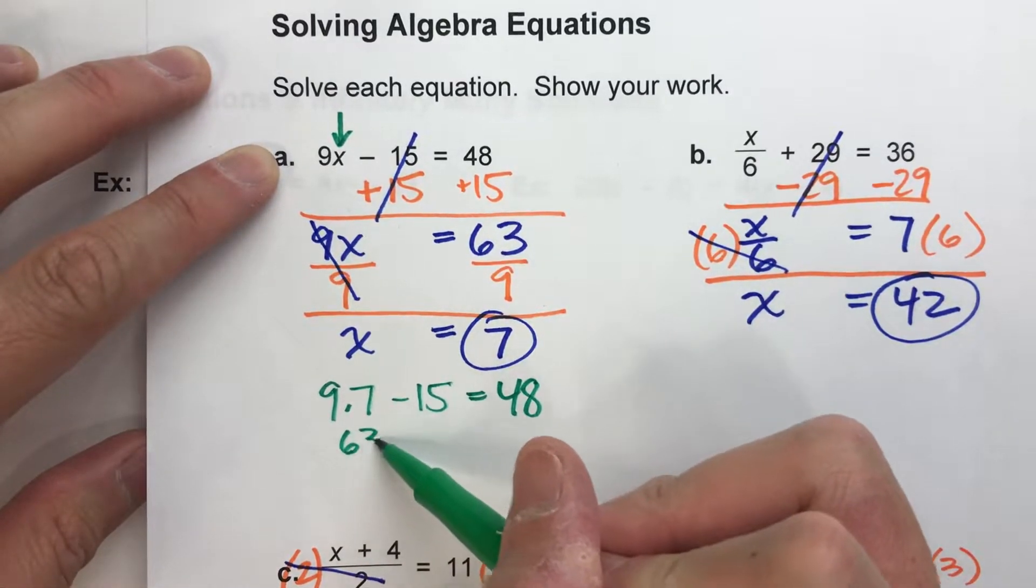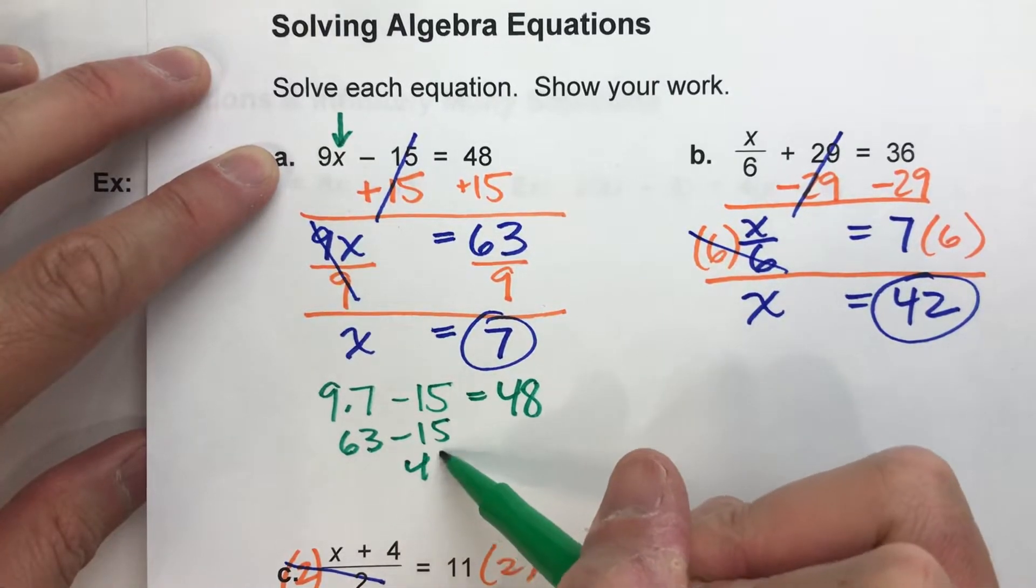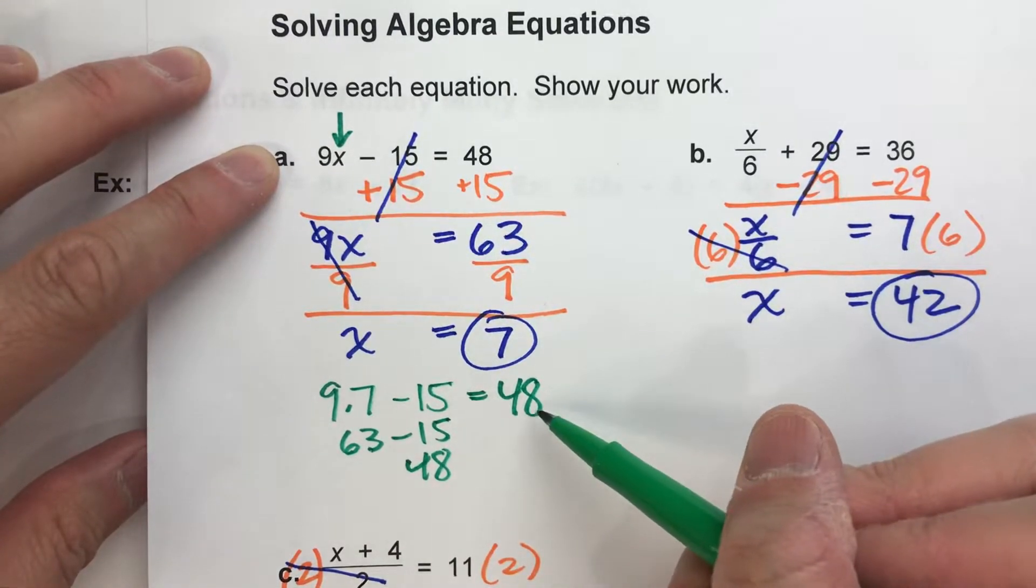9 times 7 is 63. 63 minus 15 is indeed 48, which is what it's supposed to.